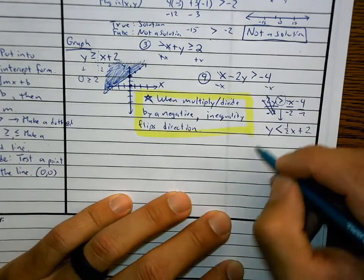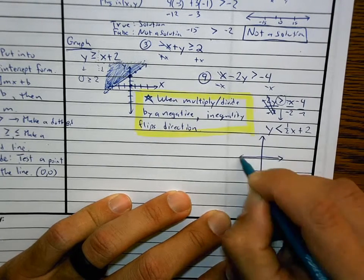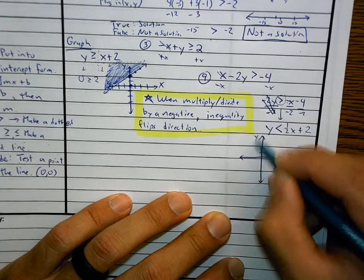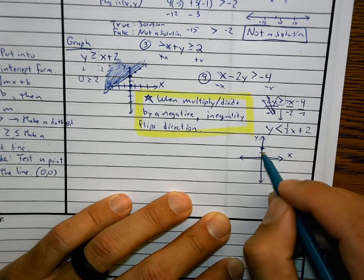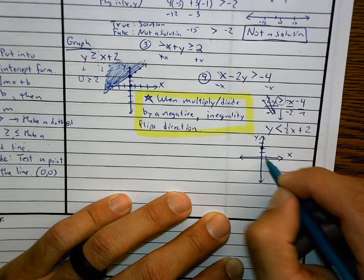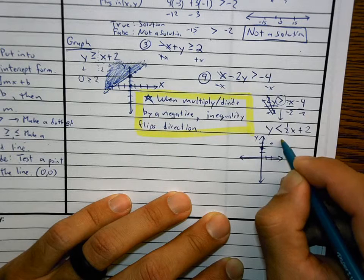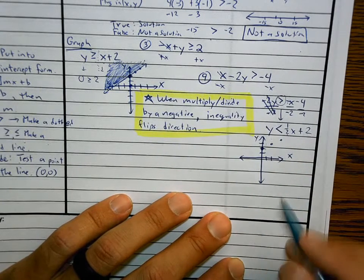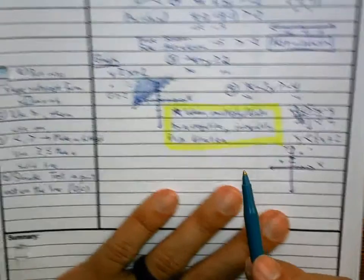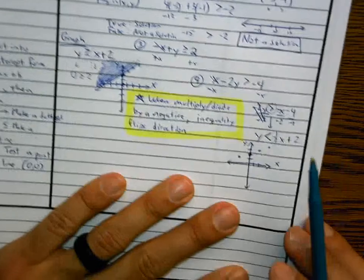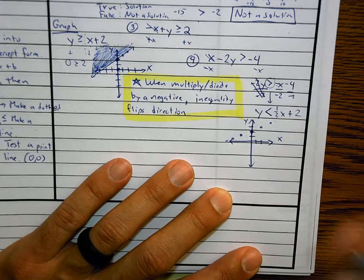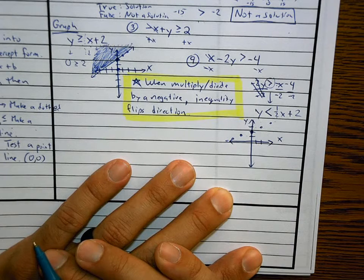The b is 2, so I go over to 2 and put a dot. From there I use my slope — rise 1, run 2; up 1 over 2. I could even go negative 1 down and to the left 2. Now, is this a dotted or solid line? It's dotted, because there's no equal to. That means anything on the line is out of bounds — not a solution.